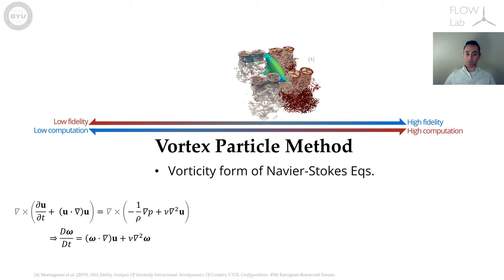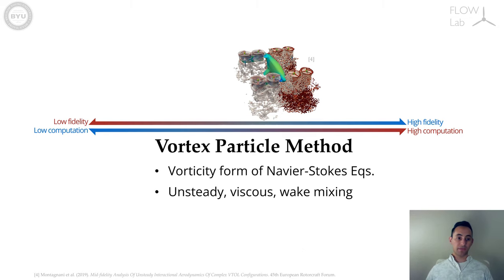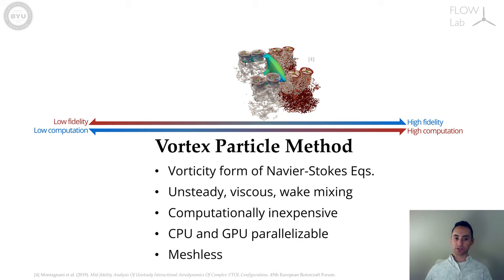These equations are obtained taking the curl over the momentum equation. The vorticity equation is then discretized with radial basis functions with centers that are convected by the velocity field and the coefficients of the basis functions are stretched by the flow. The VPM solves the unsteady dynamics of the flow. It is viscous and in theory is able to resolve wake mixing and turbulence. The method is computationally inexpensive since elements are placed only where vorticity exists. It is parallelizable and it is completely meshless.